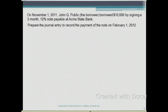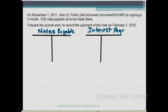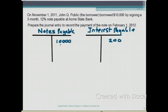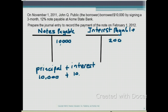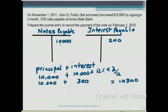The final part asks us to prepare the journal entry to record the payment of the note on February 1, 2012. At the beginning of the new accounting year, after closing the books, we have notes payable with a credit balance of $10,000 and interest payable of $200. When paying back the note, we pay $10,000 plus $10,000 × 12% × (3/12) = $300 in interest. So the total cash payment is $10,000 + $300 = $10,300.